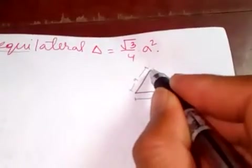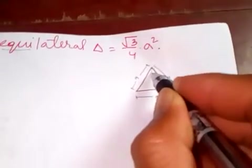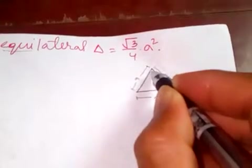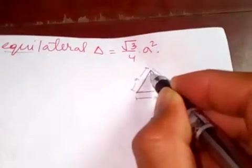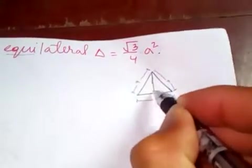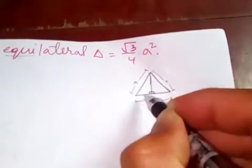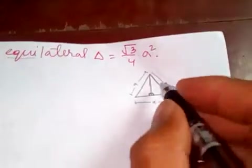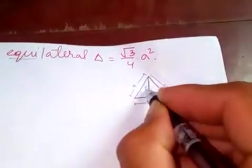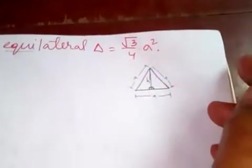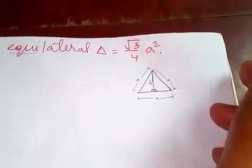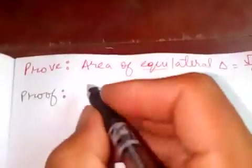Now let's draw here one perpendicular line which makes 90 degrees with the base, and let's denote this by h. And now the area of...